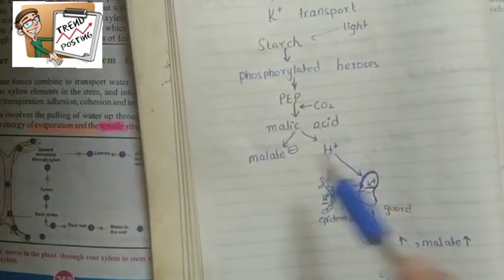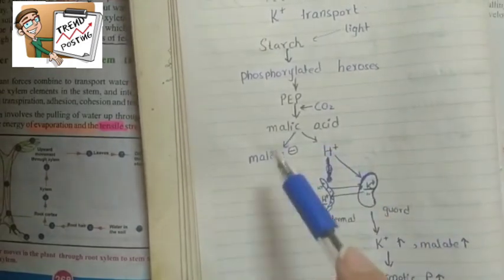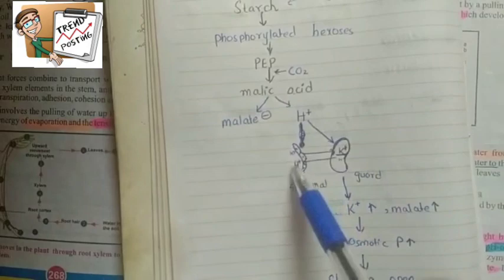Phosphoenolpyruvic acid absorbs carbon dioxide and converts to malic acid. Malic acid converts to malate ion and hydrogen ion, because we know acids contain hydrogen ions.